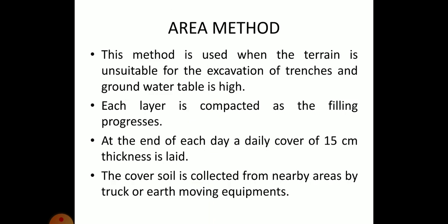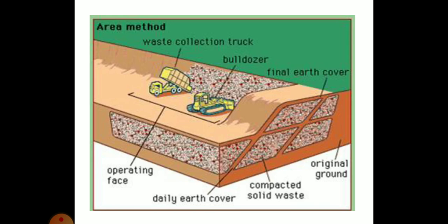There are two types of sanitary landfill. The first is the area method. This method is used when the terrain is unsuitable for excavation of trenches and when the groundwater table is high. Each layer is compacted as the filling progresses, and at the end of each day a daily cover of 15 cm thickness is laid. Cover soil is collected from nearby areas by means of trucks or other earth-moving equipment. In this method, the waste collection truck disposes the waste and a bulldozer does the compacting work. The landfill after completion is much above the original ground level.